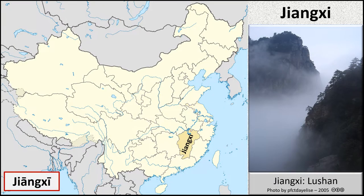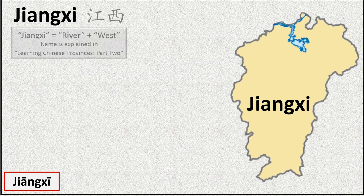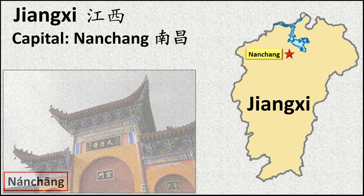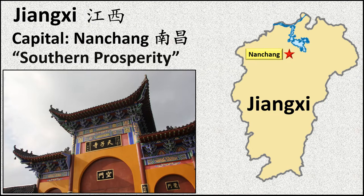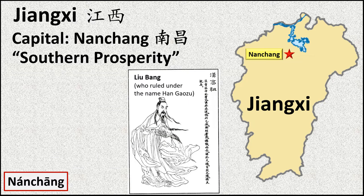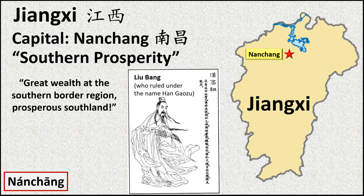Now let's move our focus to the province of Jiangxi. Its name is the combination of the words for river and west. Jiangxi's capital is Nanchang. Literally, the name means Southern Prosperity. The name is said to be derived from a slogan coined by Liu Bang, the first emperor of the Han dynasty. He proclaimed: great wealth at the southern border region, prosperous southland.